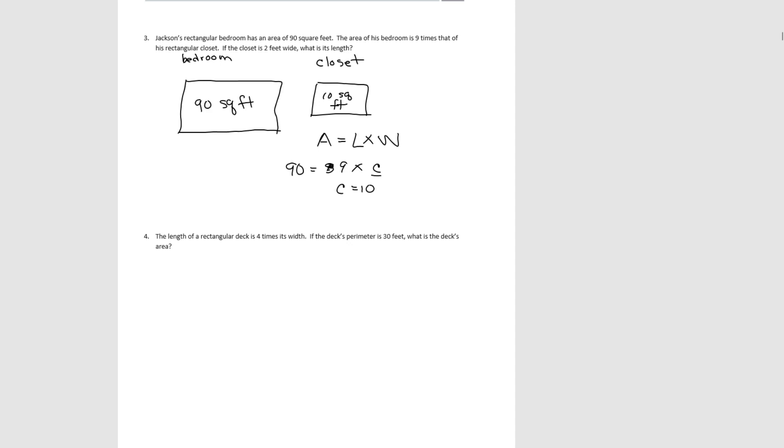If the closet is 2 feet wide, what's its length? Well again, since we said area equals length times width, if the area is 10 and the width is 2, then 5 × 2 = 10. So the length has to be 5 feet.